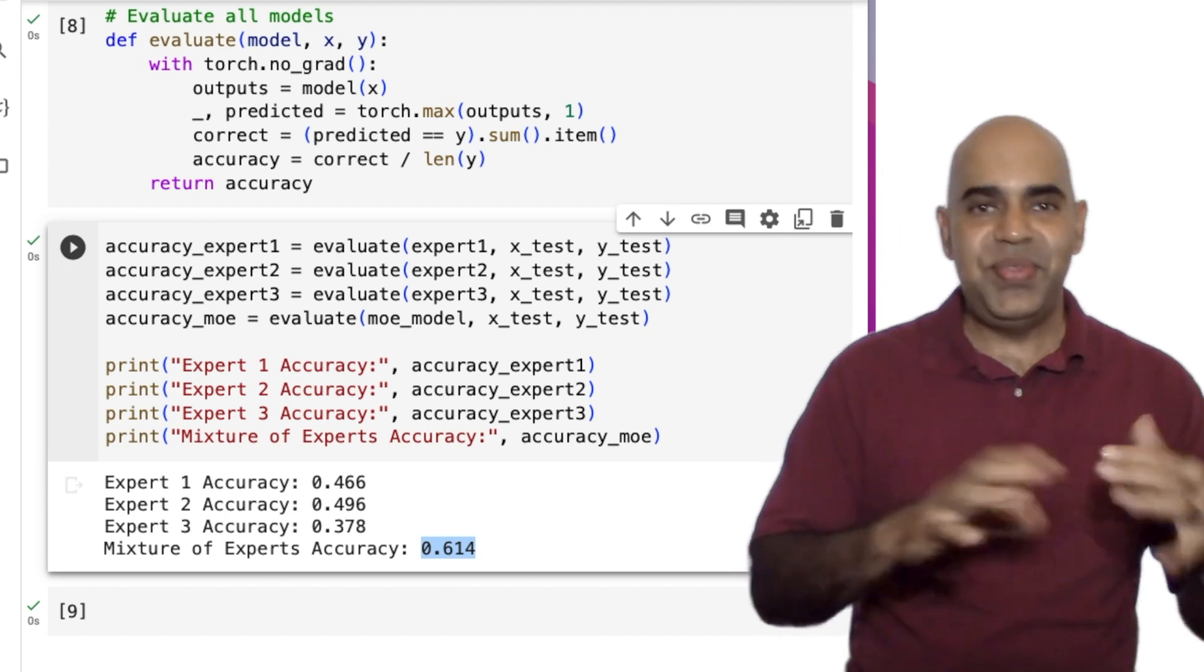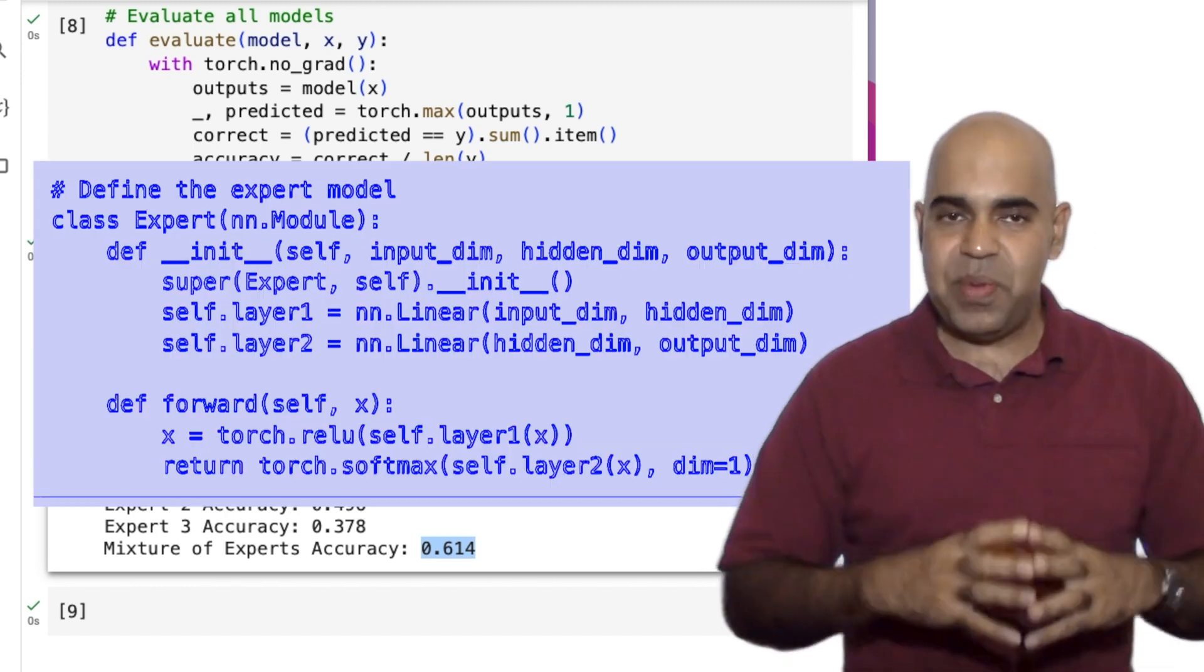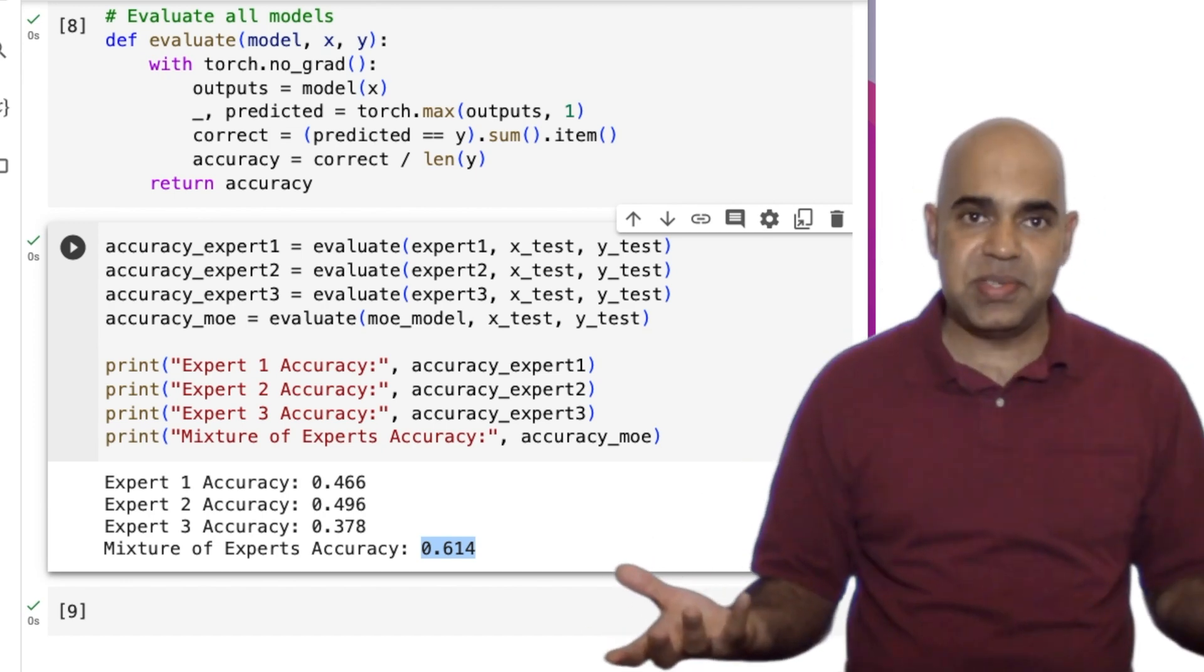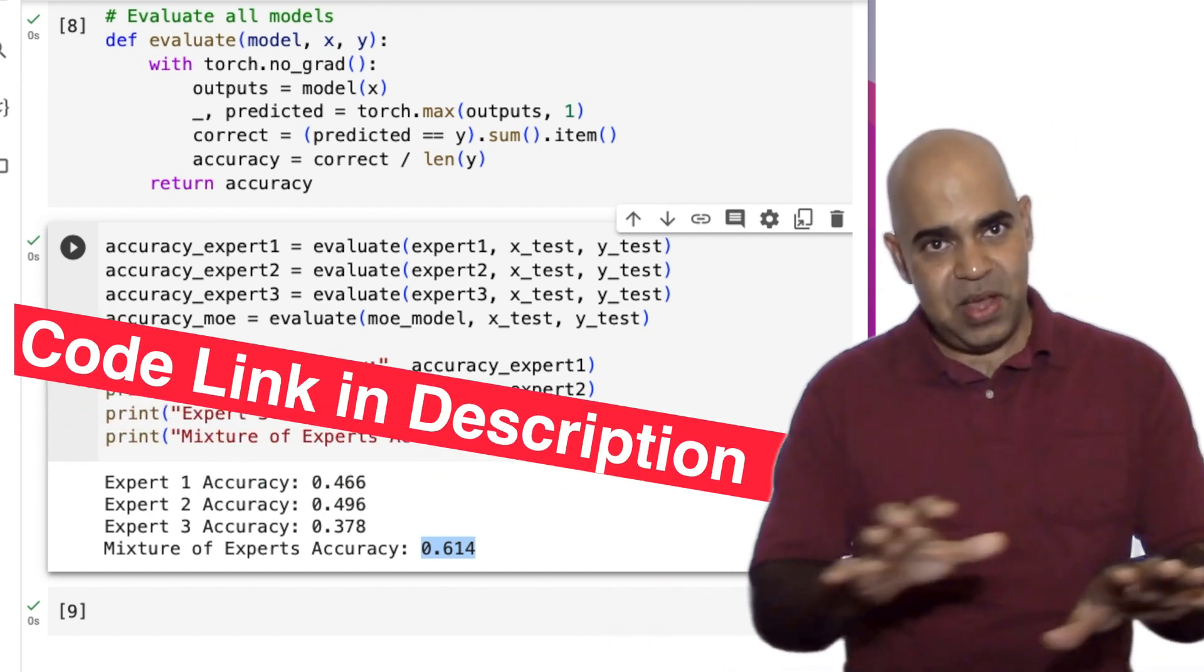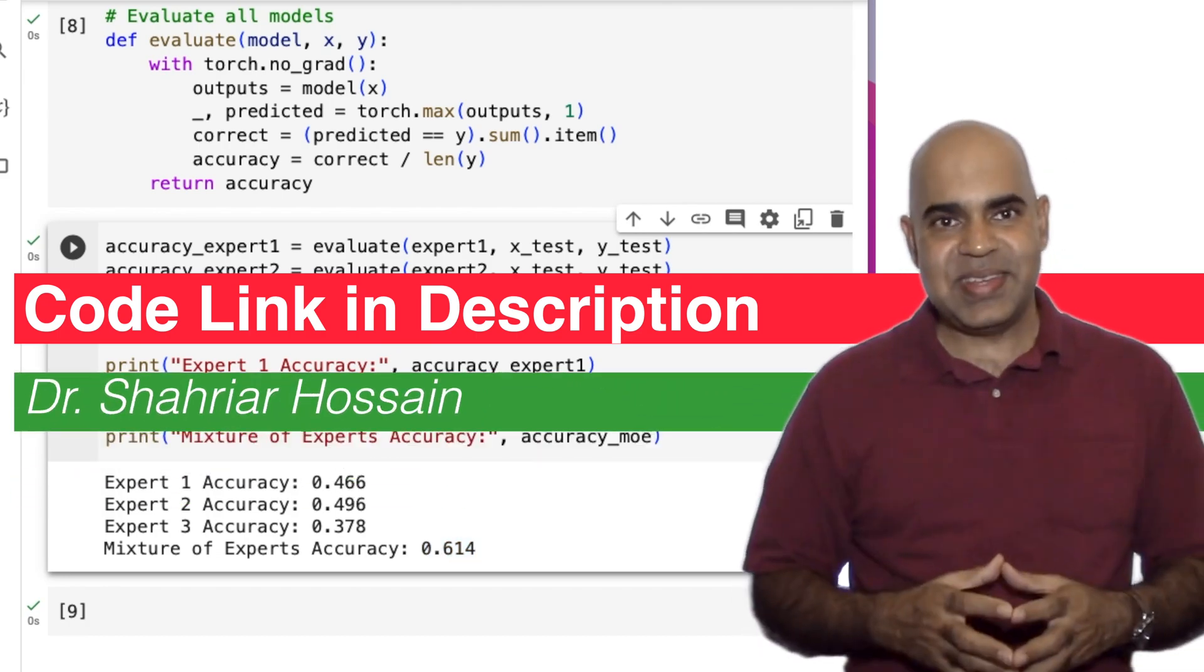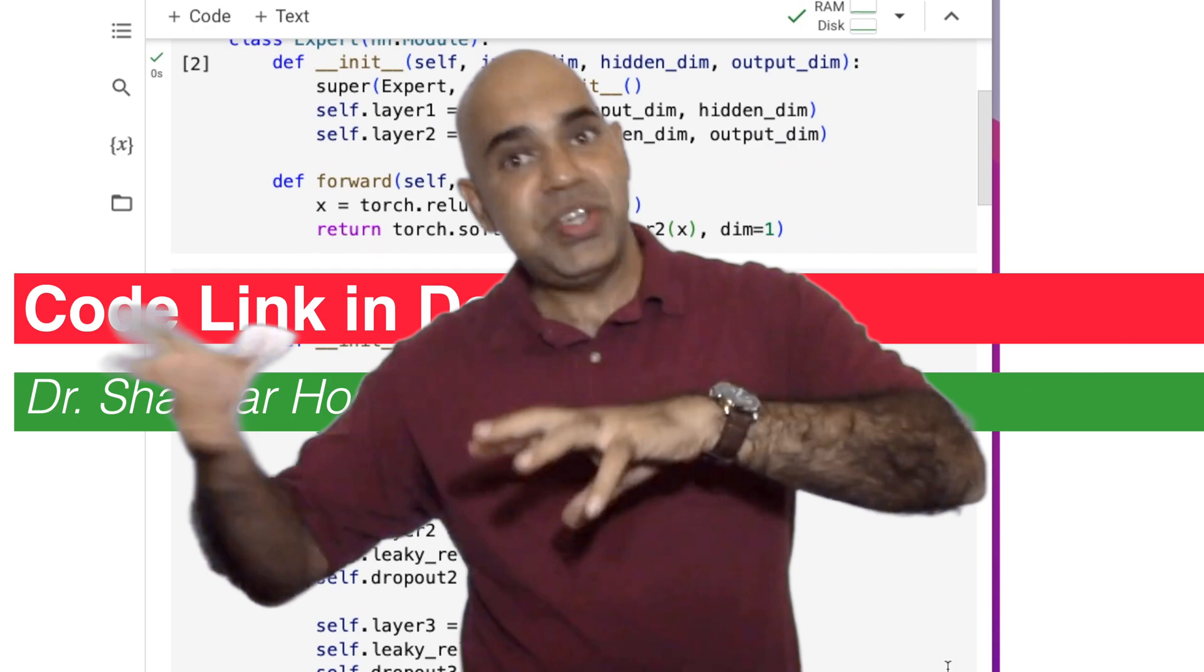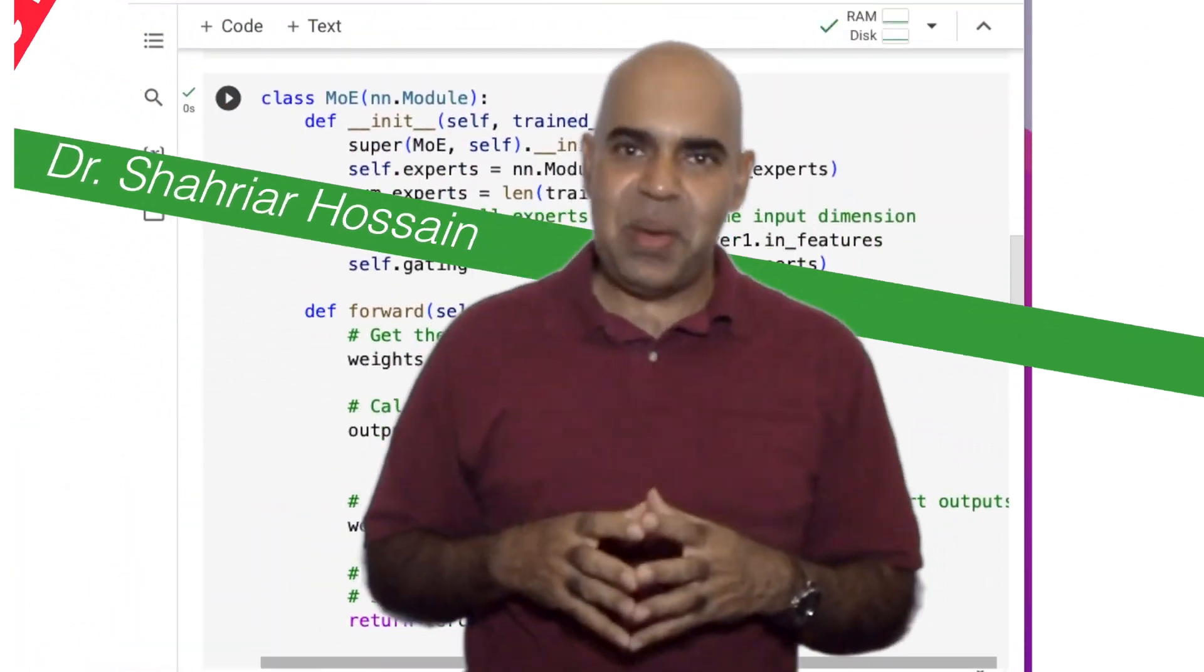In our code, the three experts had the same architecture, but in your code, three experts may have different architectures. A mixture of experts can be a lot more complex than what we discussed today. It can be even a mixture of many mixtures of experts. That can be a topic of another day.